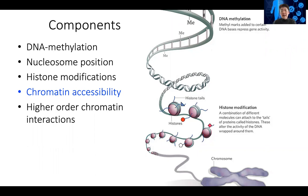Histone marks are important for telling us what regions are important, including annotating genes, marking the beginning of genes, and finding enhancers in the genome. One difficulty is deciding which histone marks to profile — this is partially dependent on the biological question and partially dependent on the availability of high-quality antibodies for that particular histone mark.